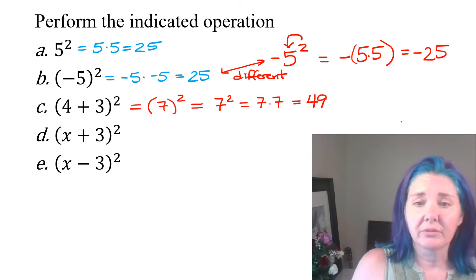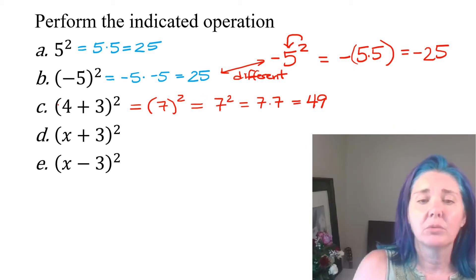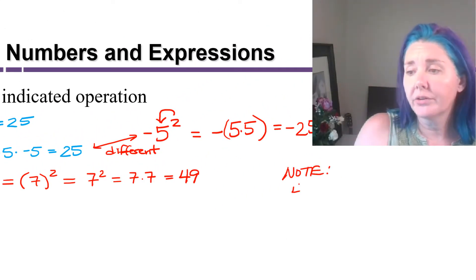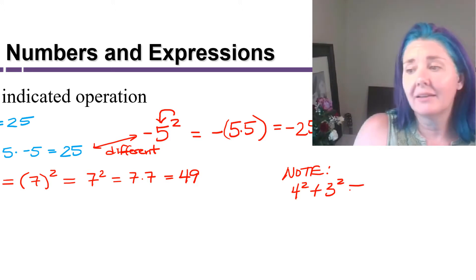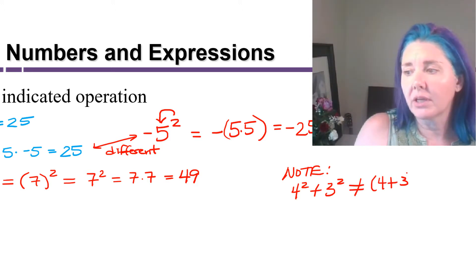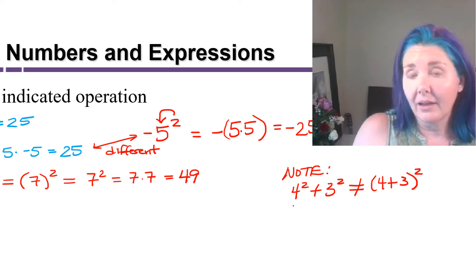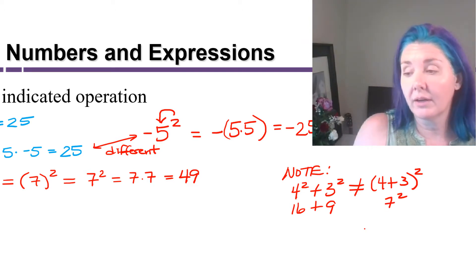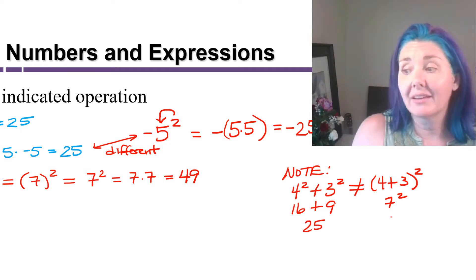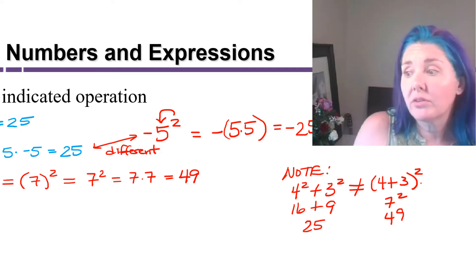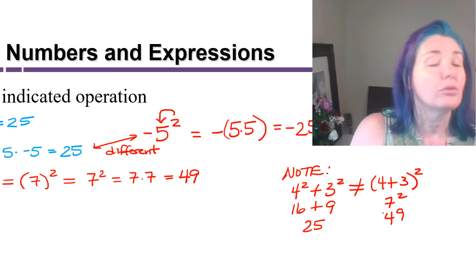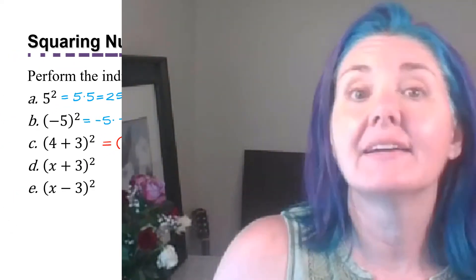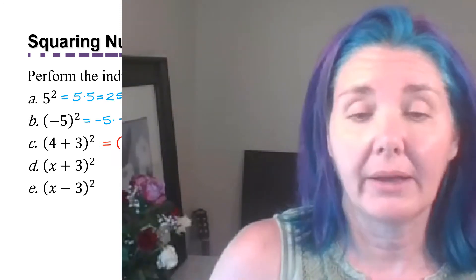A common error to avoid here is that students often want to square each part of the parentheses first. Note that four squared plus three squared is not equal to four plus three, quantity squared. On the left that would be 16 plus nine, and on the right that would be seven squared. 16 plus nine is 25, and seven squared is 49, so it just doesn't work to square each part of the addition. Don't make that mistake — always do what's inside the parentheses first.